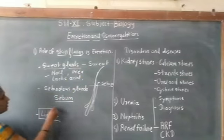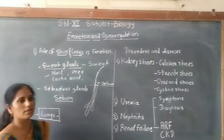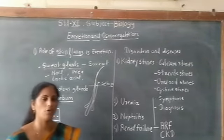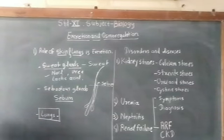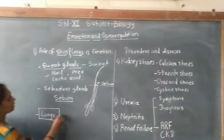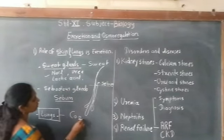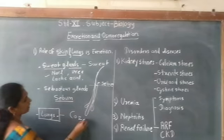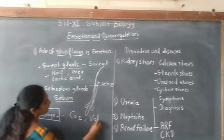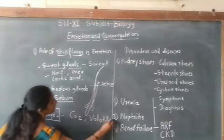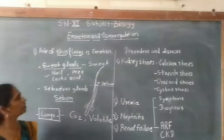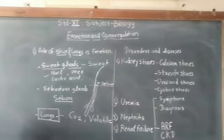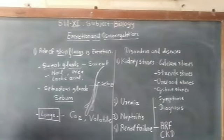Lungs are the main respiratory organ in vertebrates, but in humans and other vertebrates, lungs also release carbon dioxide outside the body. In addition to CO2, some volatile substances are also excreted by the lungs. Therefore, lungs act as an excretory organ in all vertebrates.